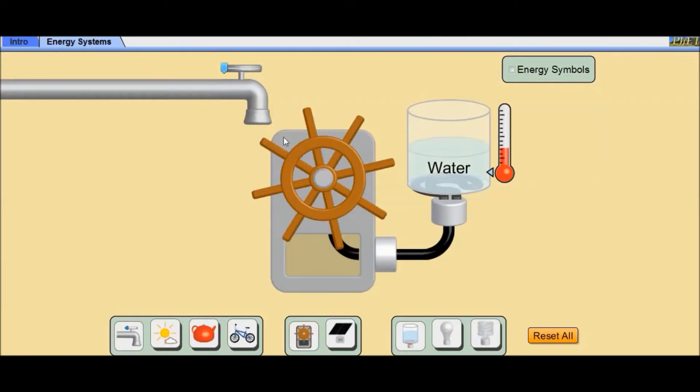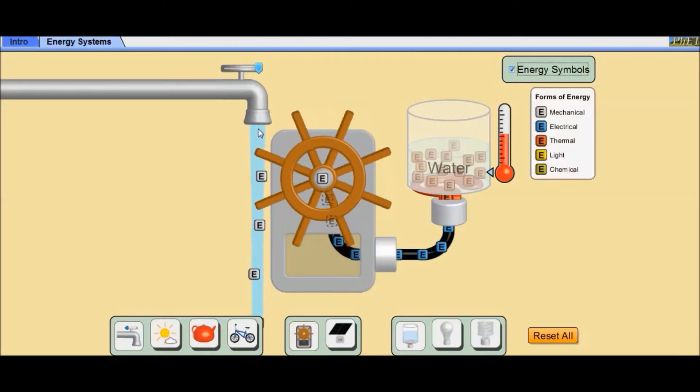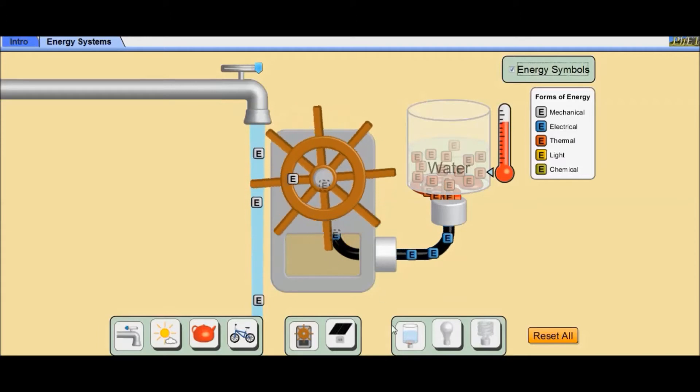First of all, let's see how the mechanical energy is converted into thermal energy. When we turn the tap, the water from the pipe falls on the turbine blades and rotates the turbine. It is because of mechanical energy of the water, seen in gray color.